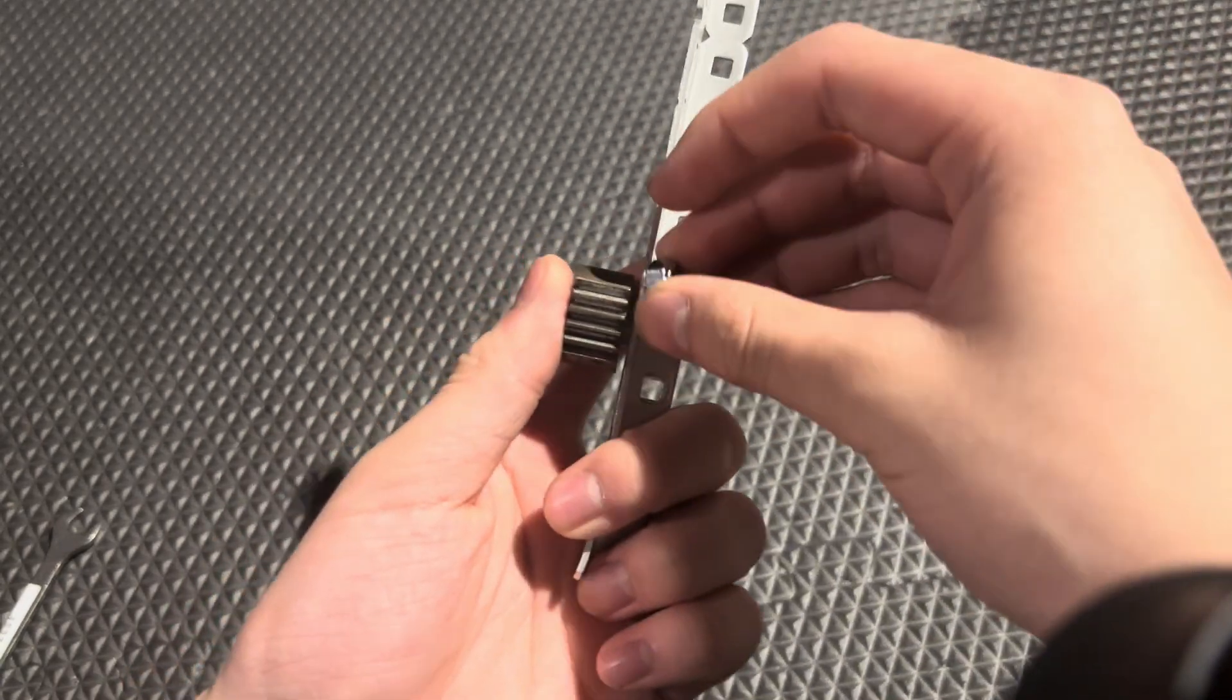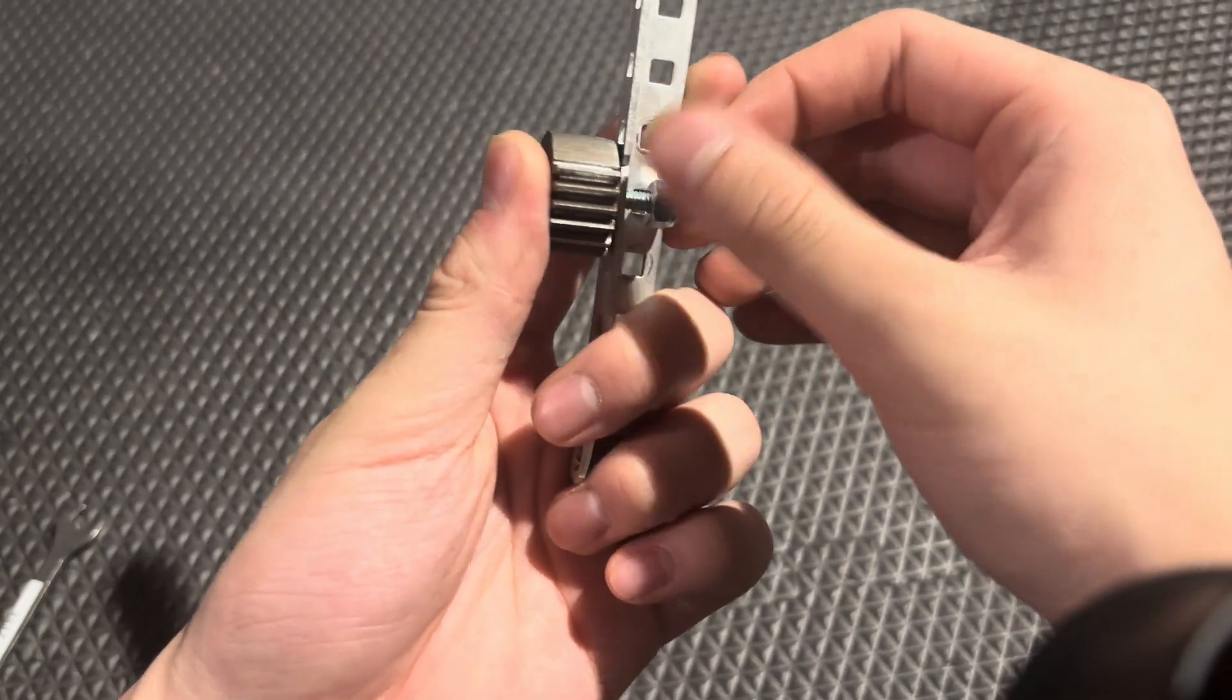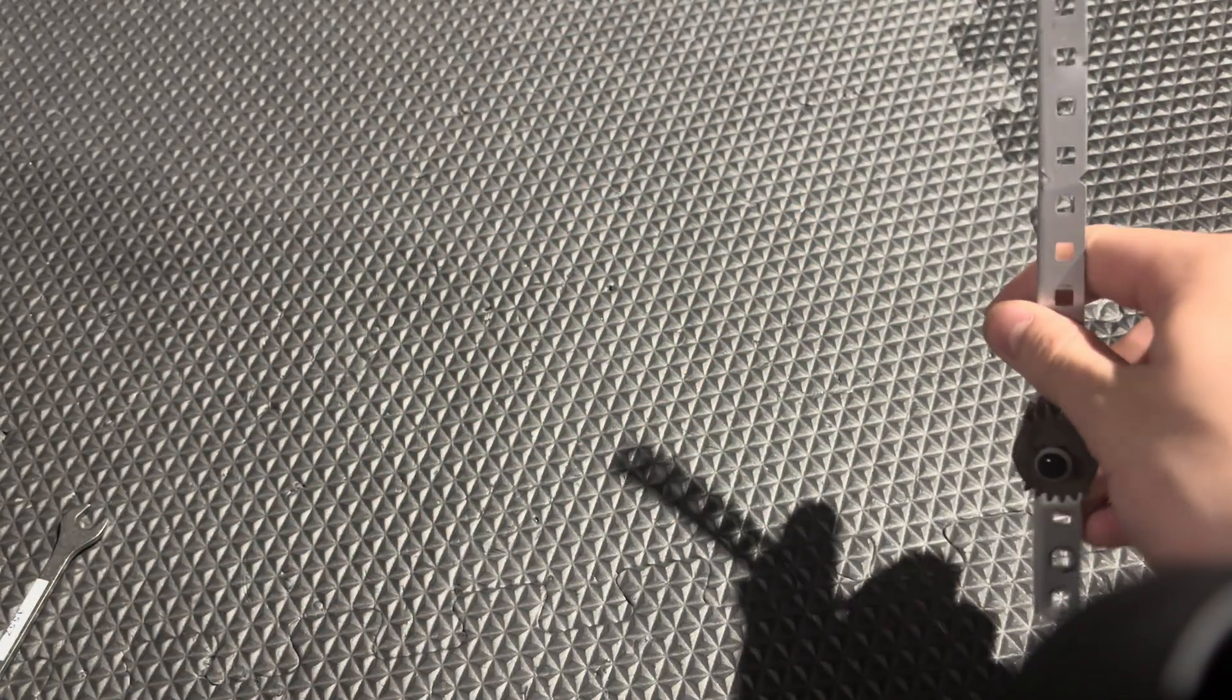And then, you just want to lock it down with the nylock to the point where it's rigid, but it's also able to move and free-spin on it. So, I'll kind of show that.